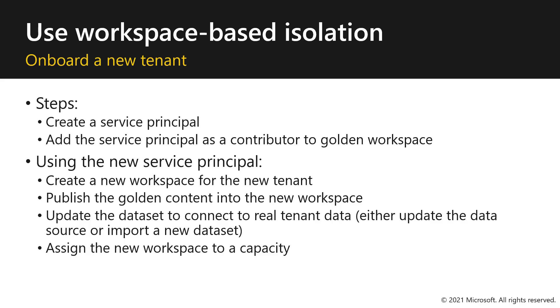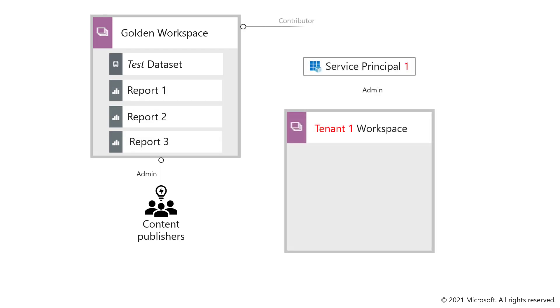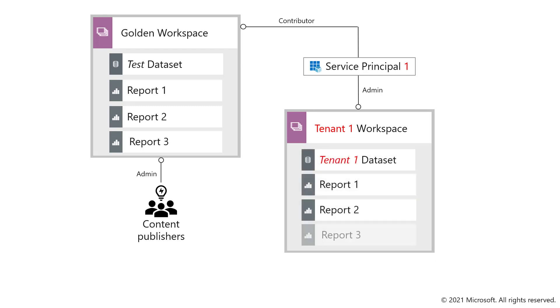Let's see how this flow works in action. Workspace isolation ensures that a workspace per tenant contains all the required Power BI content. First, we create the golden workspace containing all Power BI artifacts ready for replication for each tenant. We create a specific instance for tenant 1 by creating a new workspace using the service principal and cloning the golden workspace artifacts. The dataset is updated to access tenant 1 data, and we can use automation scripts to do all of this setup. Finally, we can add the new workspace to a capacity — and again, you can use automation scripts to do this. When we're ready to onboard a new tenant, we can just repeat these steps.